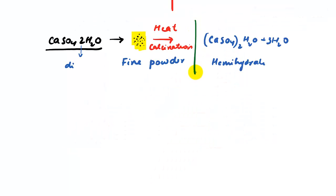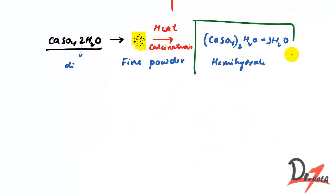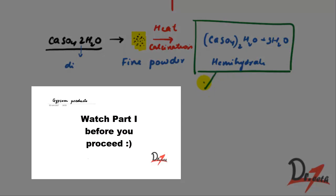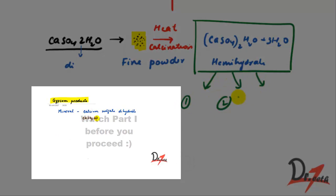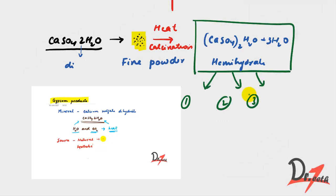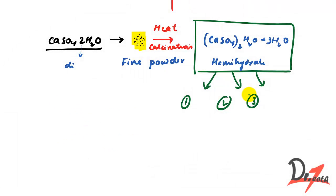We can produce calcium sulfate hemihydrate in three ways — there are three methods. Depending on the method we follow, various types of gypsum products will result.